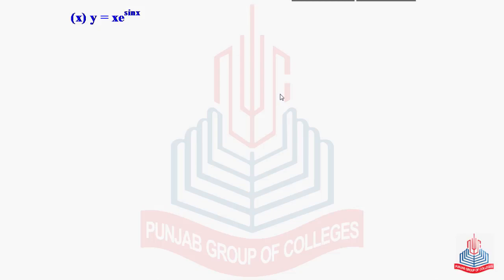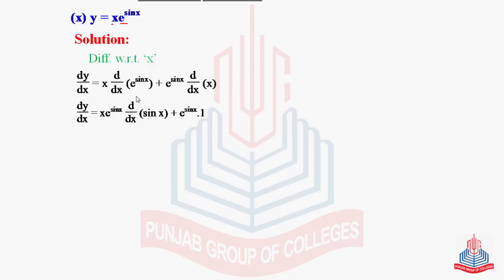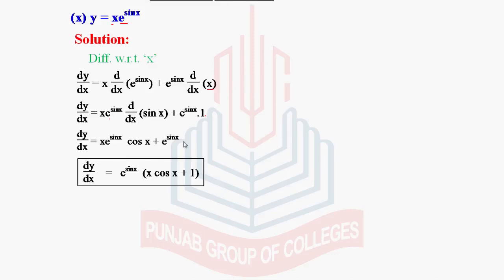Part 10: y = x · e^(sin x). Again a product of two functions. Differentiating with respect to x: dy/dx = x · d/dx[e^(sin x)] + e^(sin x) · d/dx(x). The derivative of e^(f(x)) is e^(f(x)) times f'(x); here f(x) = sin x, so we get x · e^(sin x) · cos x + e^(sin x) · 1. Taking e^(sin x) as a common factor, the final result is e^(sin x) · (x cos x + 1).